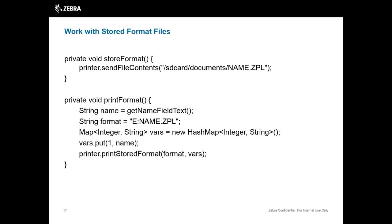Storing a format is fairly simple. In this case, we're assuming the format is a file on the device, though you could also use the connection.write method to send a ZPL string directly to the printer — which is probably how most developers are printing now. Sending the file as a format stores it on the printer; nothing actually prints at that point. Once you have the status and want to print, you fill in any dynamic data from a text box or database, specify the format name, create a HashMap with your variables, and print the stored format using that command.